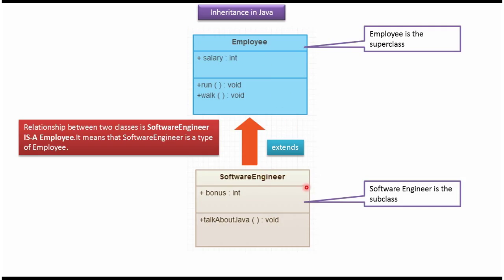So SoftwareEngineer is a subclass and Employee is a superclass. The relationship between the two classes is: SoftwareEngineer IS-A Employee — that means SoftwareEngineer is a type of Employee. Because SoftwareEngineer extends Employee, SoftwareEngineer acquires all properties and behaviors from Employee. Now we will see the example.